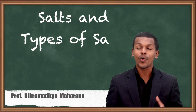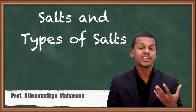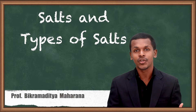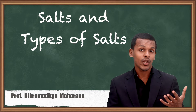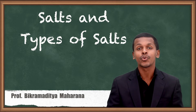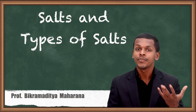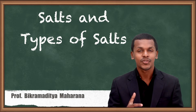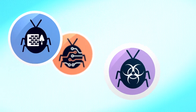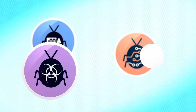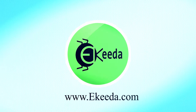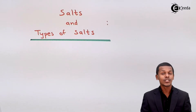Hey friends, now we are going to talk about what is salt and what are the types. As you know, salt is the one that has been produced because of the utilization of an acid and base. There are various types, so this is the lecture where we are going to talk about what is salt and what are the various types of salt.